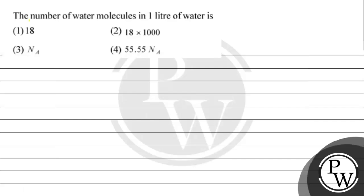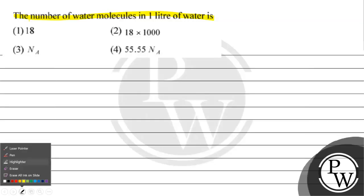Hello guys, let's treat this question. The question says the number of water molecules in 1 liter of water is: option 1 is 18, option 2 is 18 into 1000, option 3 is Avogadro's number, option 4 is 55.5 into Avogadro's number.